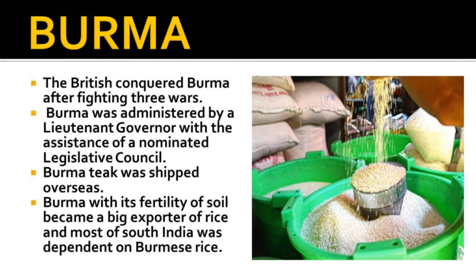Burma: The British conquered Burma after fighting three wars. Burma remained part of India from 1886 to 1937, administered by a lieutenant governor with assistance of a nominated legislative council. Burma teak was shipped overseas. Burma, with its fertility of soil, became a big exporter of rice and most of South India was dependent on Burmese rice. During World War II, when Burma fell to the Japanese, South India experienced acute scarcity of rice, leading to a famine.